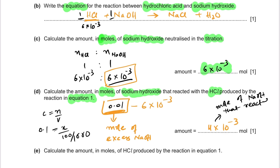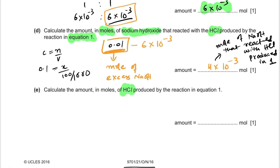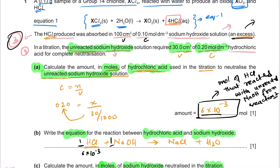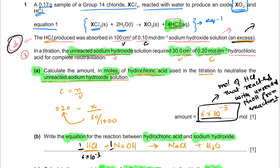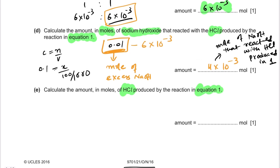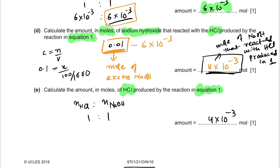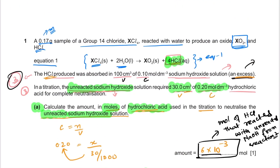In the next part, calculate the amount in moles of HCl produced by the reaction in equation 1. We know that 4×10⁻³ moles of NaOH reacted with HCl from reaction 1. Since the ratio between HCl and NaOH is 1:1, the moles of HCl produced in reaction 1 is also 4×10⁻³ mol.